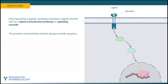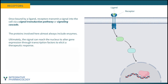Once bound by a ligand or a pharmacological agonist that mimics that ligand, the receptor transmits a signal into the cell by activating or modulating proteins downstream of it. This is essentially a chain reaction — a signal transduction pathway, also called a signaling cascade. These pathways connect the cell's environment with its innermost workings, allowing it to respond rapidly and in a coordinated way. Signaling pathways are fundamental to understanding health and homeostasis. The proteins involved almost always include enzymes, and ultimately the signal can reach the nucleus to alter gene expression through transcription factors to elicit a therapeutic response.